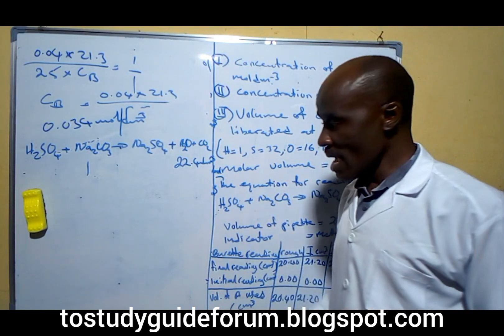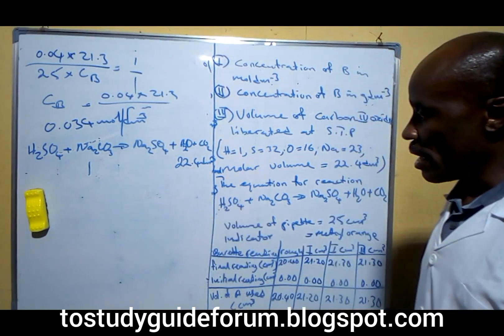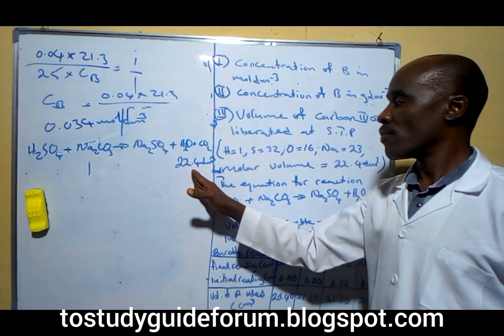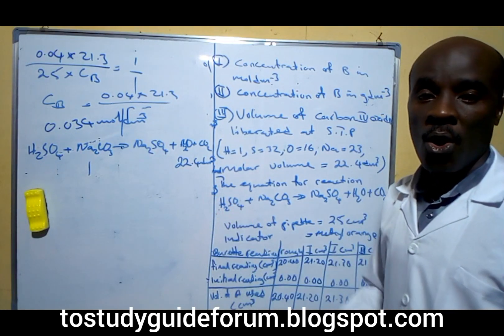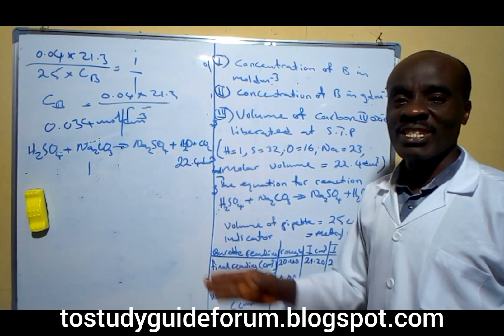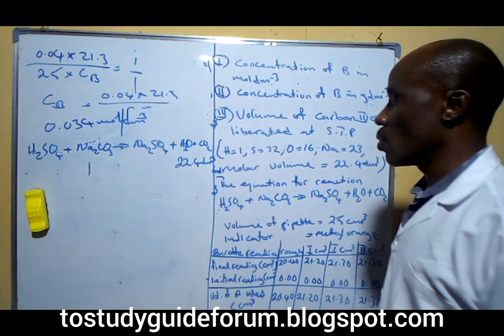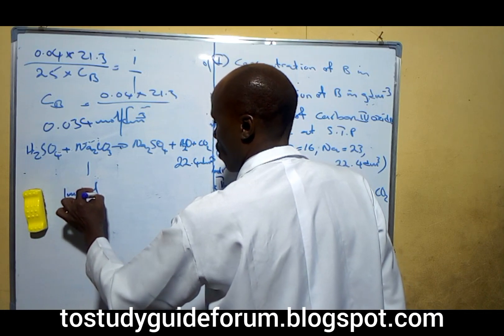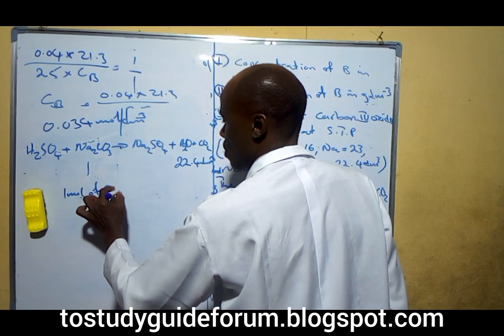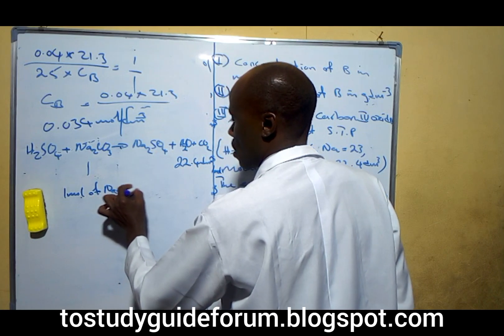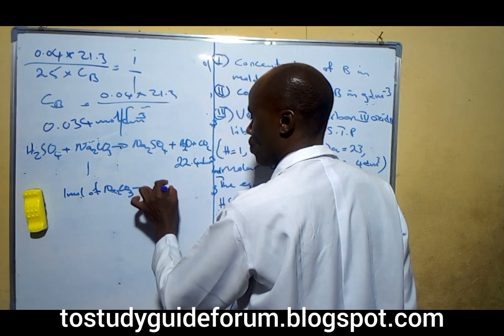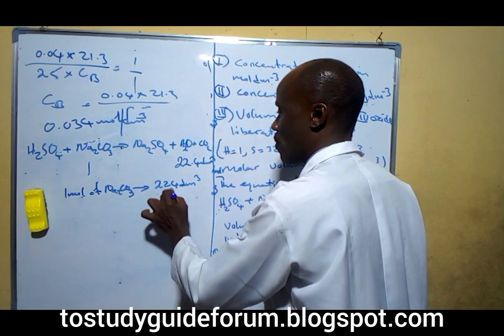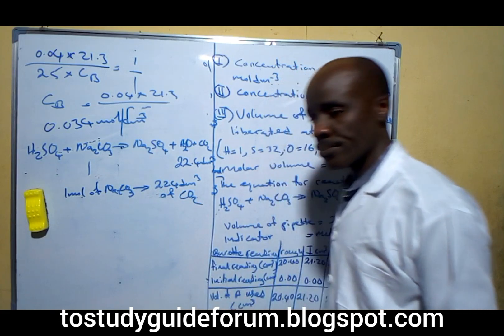At STP, the molar volume of any gas at STP is 22.4 dm³ or 22.4 liters or 22.4 cm³. That's what it means. So here, we say that one mole will give us 22.4 dm³ of carbon (IV) oxide.